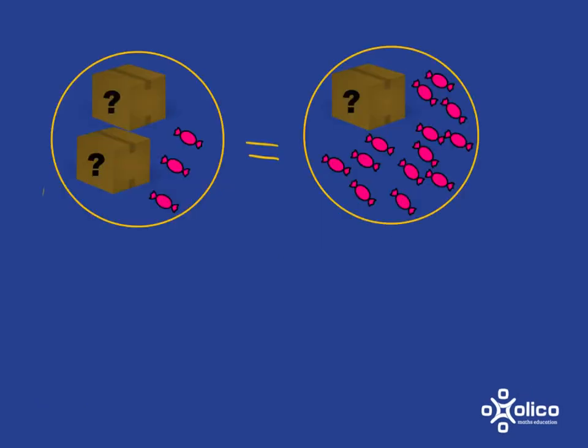Let's have a look at a scenario where the number of sweets over here is exactly the same as the number of sweets over there, and we want to keep it like that. The number of sweets in each box is exactly the same, and we're trying to figure out how many sweets are in the box.